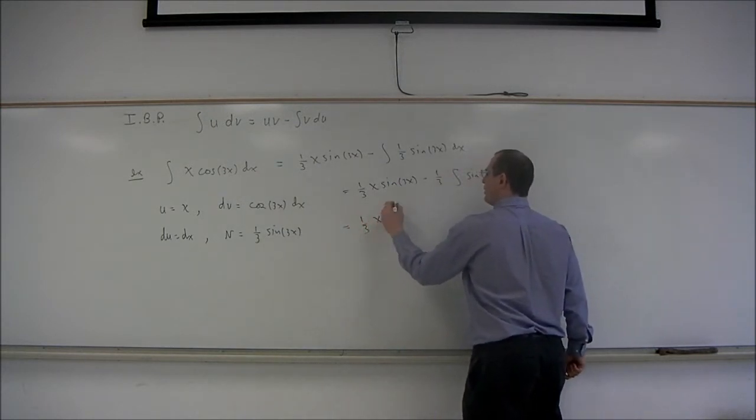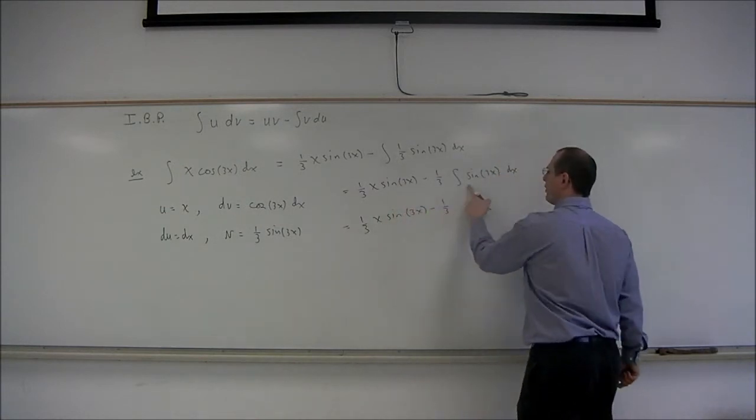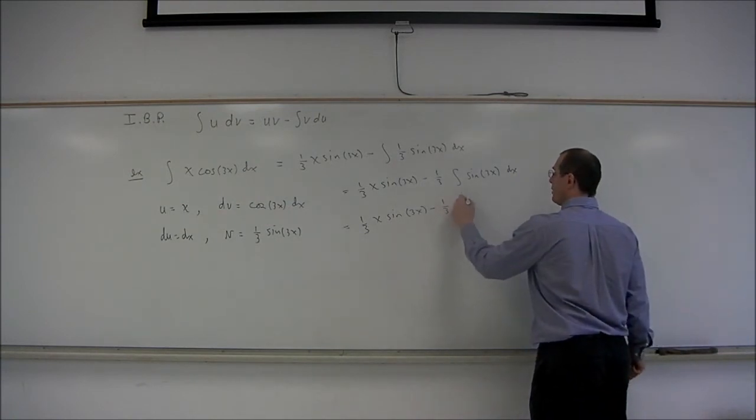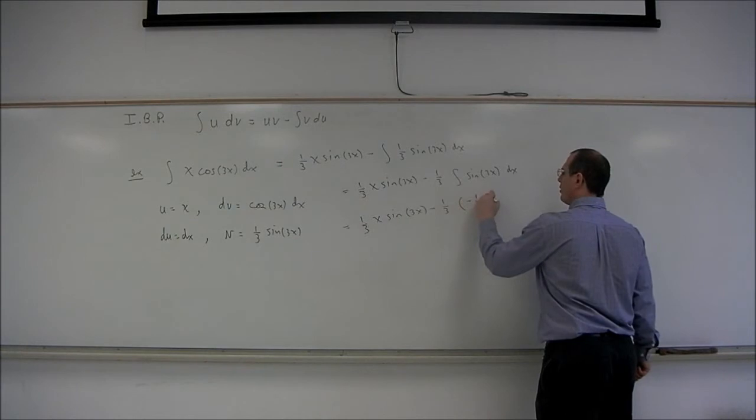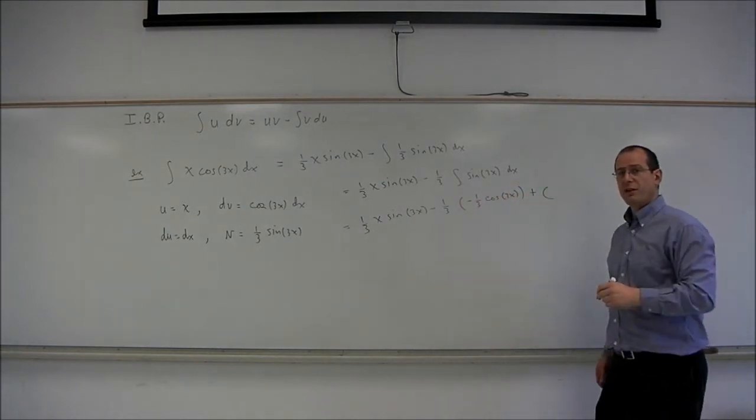That's one-third x sine of 3x minus one-third times the integral of sine is negative cosine. So this is going to be negative one-third cosine of 3x. And then plus the constant of integration.